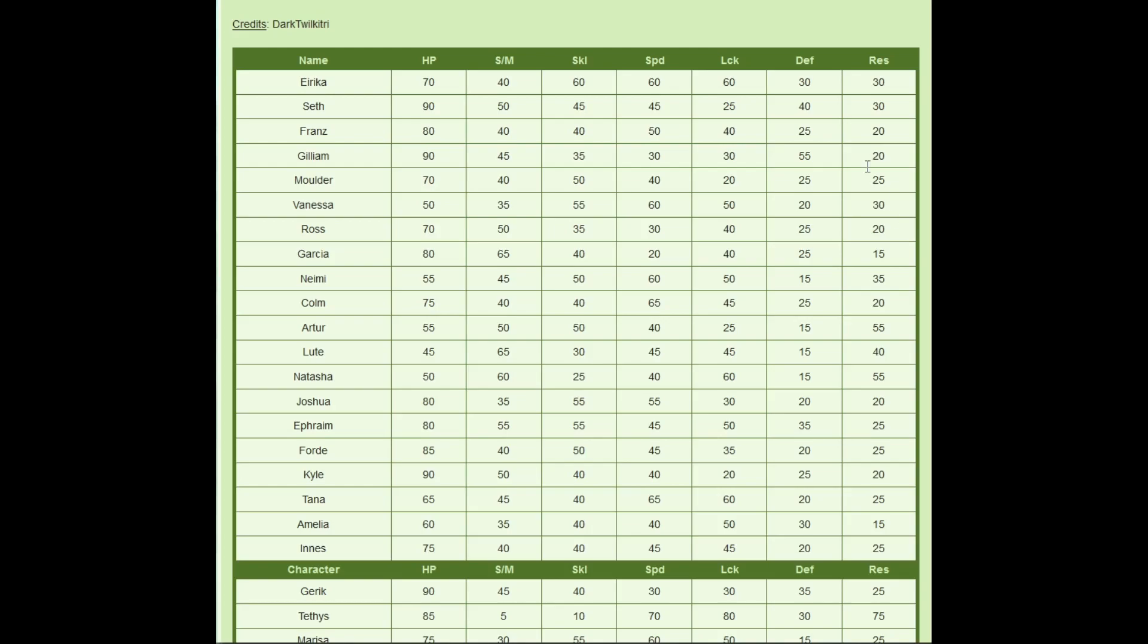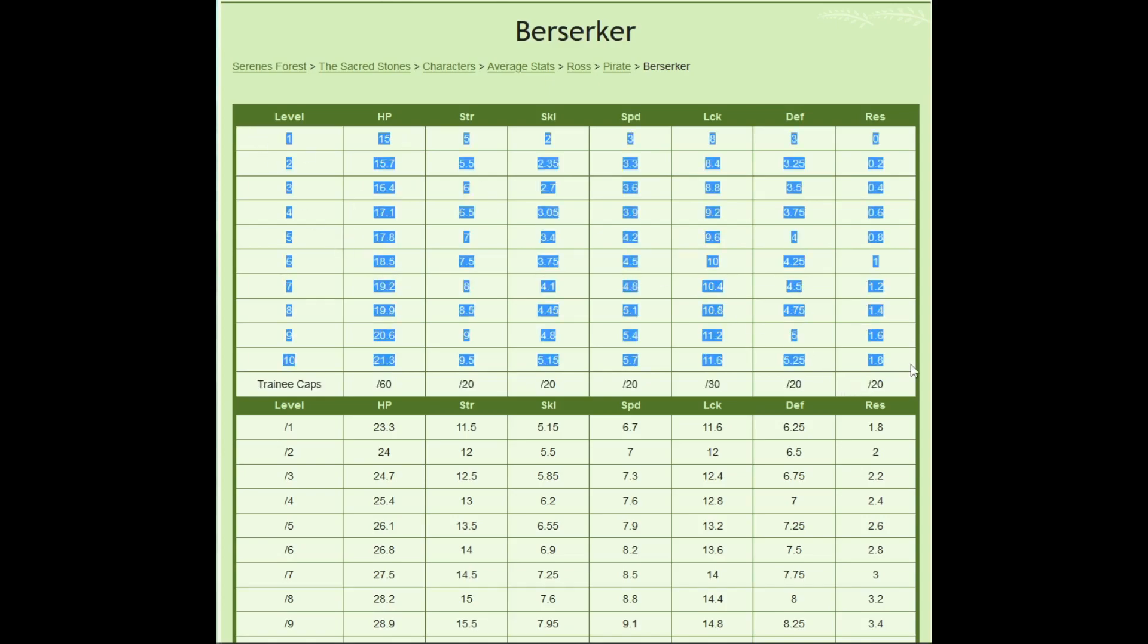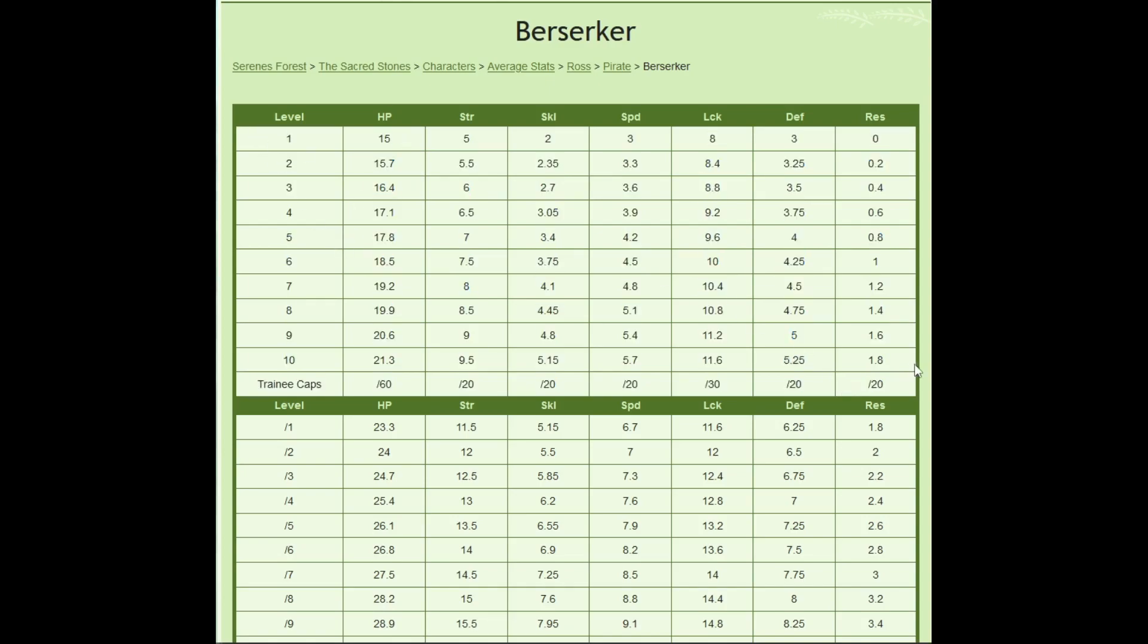And so, what people have done, is they have taken those as a decimal point, and said, hey, average expected. Just add 0.7, 0.7, 0.7, 0.5, 0.5, 0.35, 0.35, 0.35. And they've done this, and have said, hey, look, here's how average, if we're going by linear averages, your Ross will look at level 10.